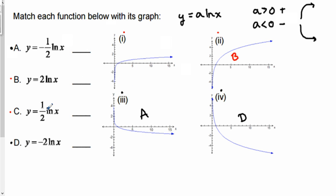And if I look at c, I've got that one-half value, meaning that the y values are not increasing as quickly as they would be for graph two here. So that would have to pair with the one-half.